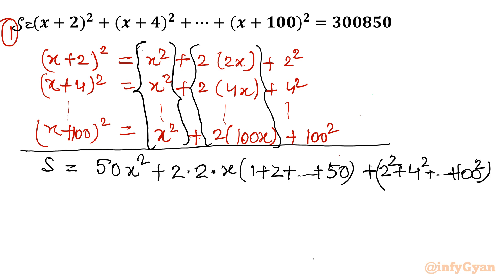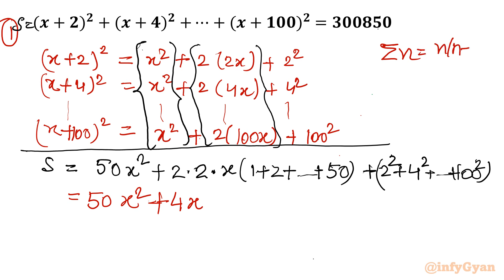Now it is very easy to apply all three summation formulas. The first term is 50x² as it is. The middle term is 4x times the sum of n numbers. We know that σn = n(n+1)/2. With n = 50, this gives 50 × 51 / 2.